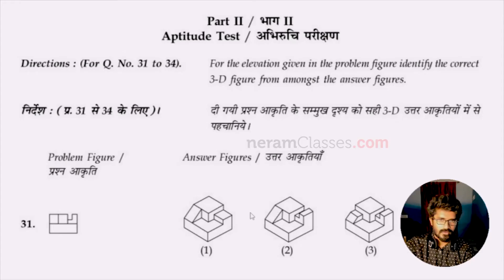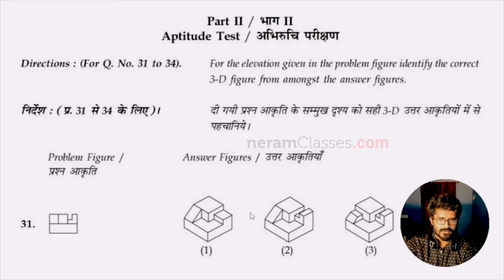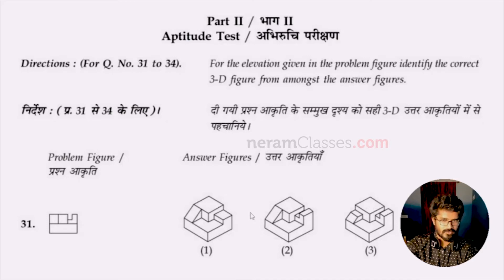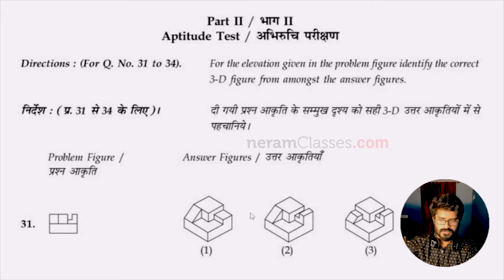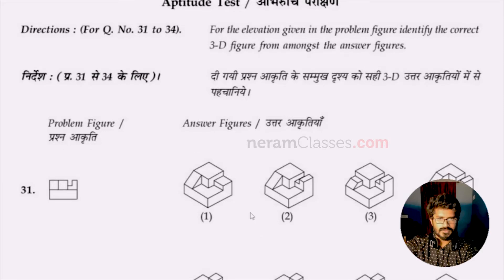From question number 31 to 34, for the elevation given in the problem figure, identify the correct 3D figure among the answer figures. They have given us some elevation and we need to find out which of the following 3D shape will have this elevation. Only one among the options will have this elevation, so we need to find out.